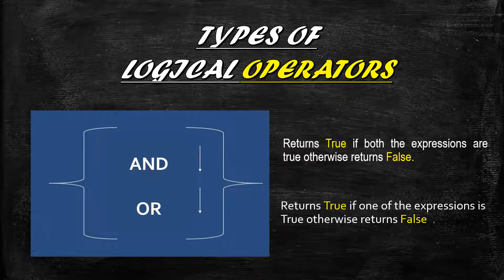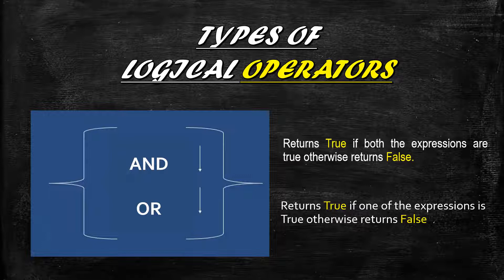There are two logical operators: AND and OR. AND returns true only if both expressions are true; otherwise it returns false. OR returns true if at least one of the expressions is true; otherwise it returns false.